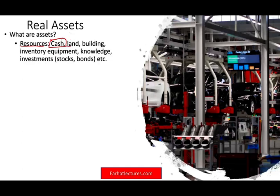Land is an asset. Building is an asset. With cash, you can buy all of those — inventory, equipment, knowledge. Knowledge is an important asset; in accounting we call it an intangible asset. This asset is extremely important in our economy today because our economy is dependent on technology, and most real assets in technology are intangible — something you don't touch and don't see. We also have other types of assets like investments such as stocks and bonds, and anything you can use to produce income from is technically an asset.